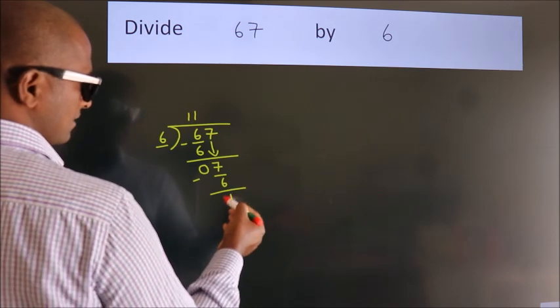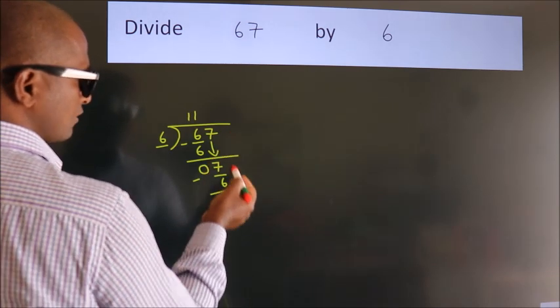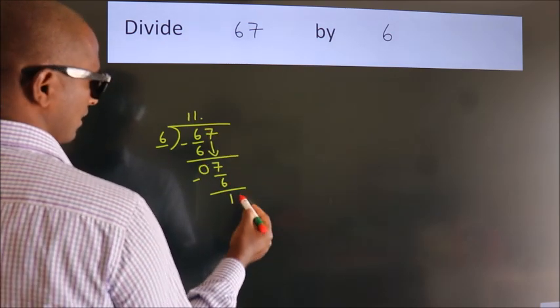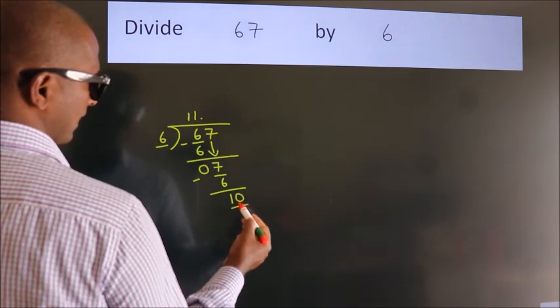After this, no more numbers to bring down. So what we do is, we put a dot and take 0. So, 10.